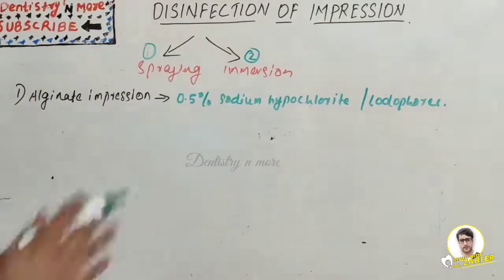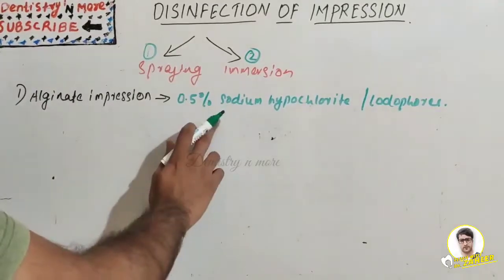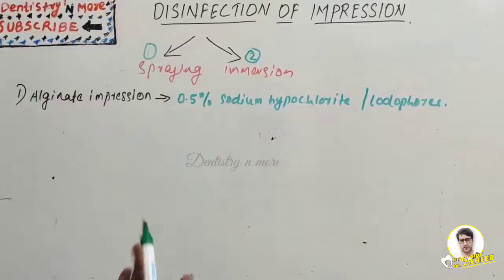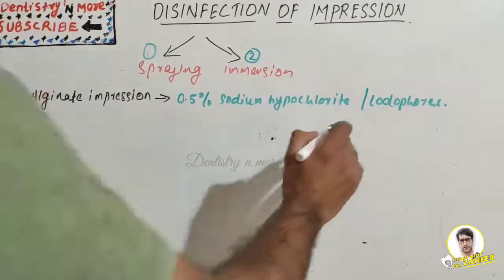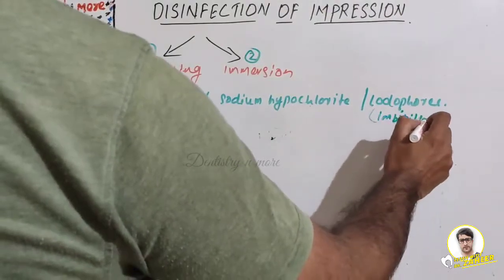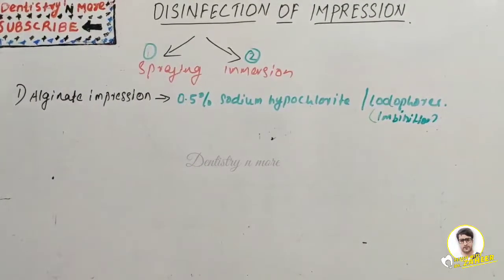Starting with alginate impression — disinfection can be done with 0.5% sodium hypochlorite or we can use iodophore. Immersion disinfection for prolonged periods might cause distortion due to the process of imbibition, but only if kept for a prolonged period. Imbibition means the impression will absorb water and there will be distortion.